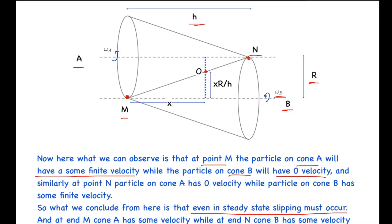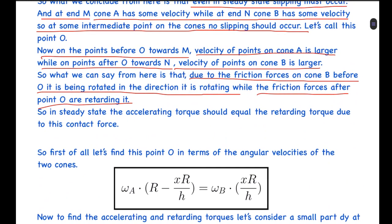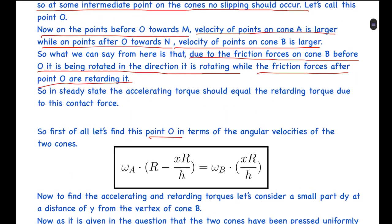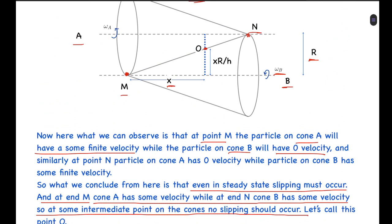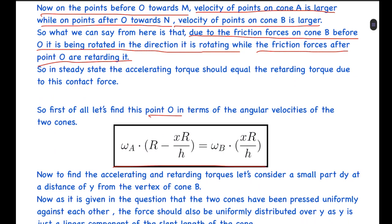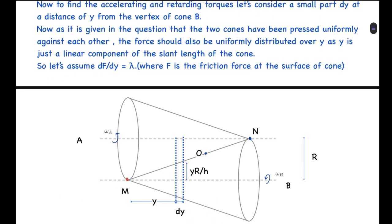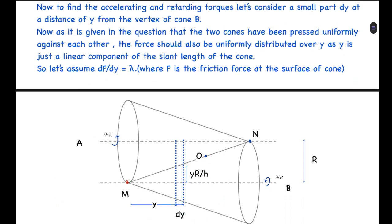Let's find the position of point O in terms of the angular velocities of the two cones. Point O is at a distance x from vertex M. By similar triangles, the radius at that point is xr/h. The velocity of this point with respect to cone B is omega_b times xr/h, and with respect to cone A it is omega_a times (r minus xr/h). Setting these equal gives our first equation.